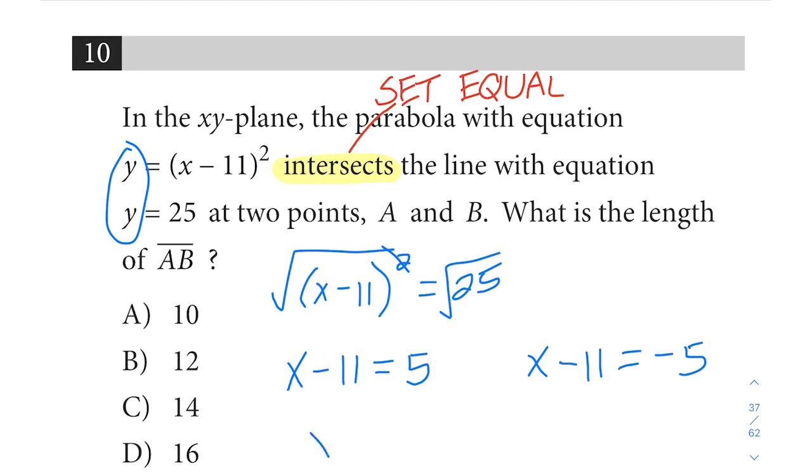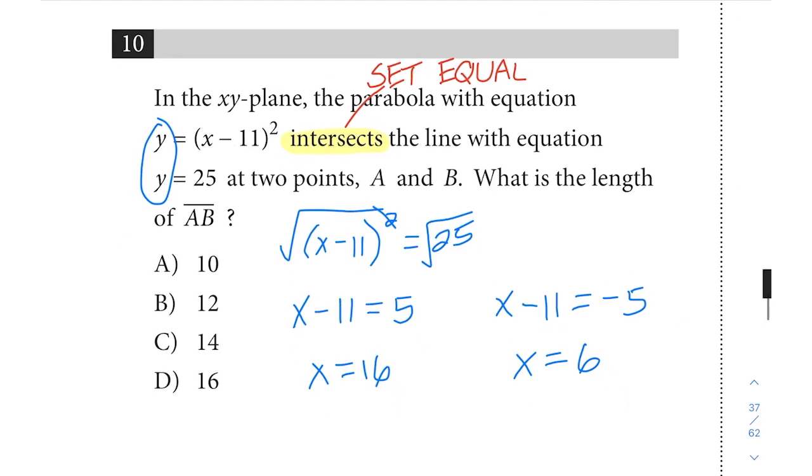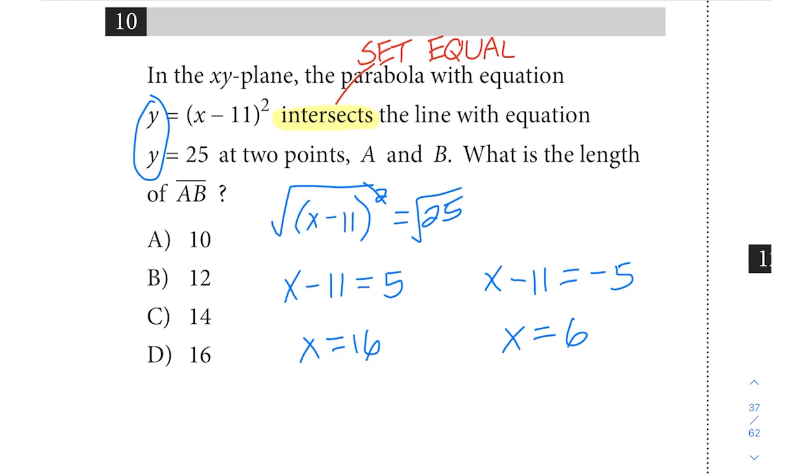If we solve each of these separately we get x is 16 and we get x equals 6. So those are going to be the two x values. Again, picture this parabola and this horizontal line. Those are the two x values where that line is going to intersect that parabola.